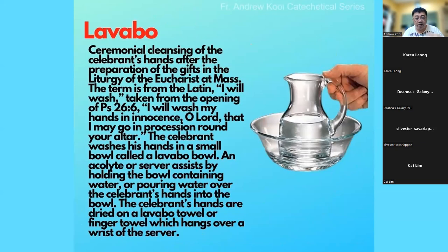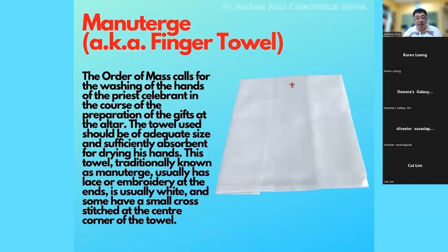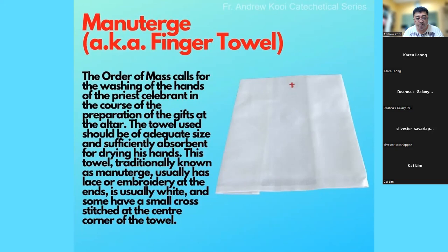There is also a special item used to wash the hands of the priest during Mass — during the Liturgy of the Eucharist after the preparation of gifts. It is called a lavabo bowl and a pouring jug. We also have a finger towel or manuterge, which is used to wipe the hands of the priest after washing. In some traditions the manuterge is given to the mother of a newly ordained priest, though this is not commonly done in all churches.